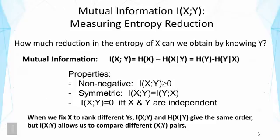Now we are going to introduce mutual information, which is another concept in information theory that allows us to, in some sense, normalize the conditional entropy to make it more comparable across different pairs. In particular, mutual information denoted by I of X and Y measures the entropy reduction of X obtained from knowing Y. More specifically, the question we are interested in is how much reduction in the entropy of X can we obtain by knowing Y. Mathematically, it can be defined as the difference between the original entropy of X and the conditional entropy of X given Y.